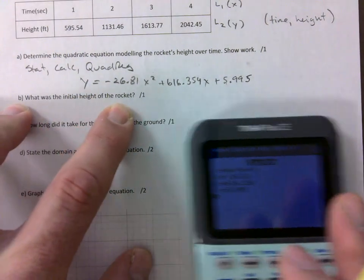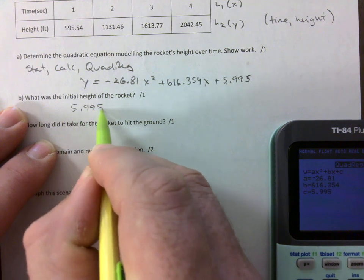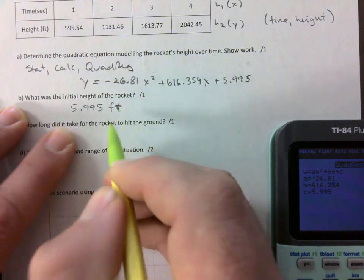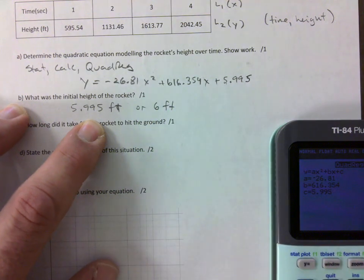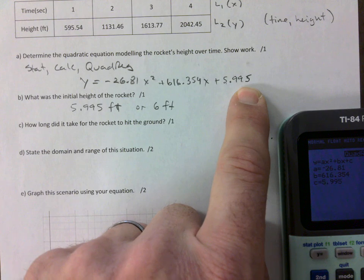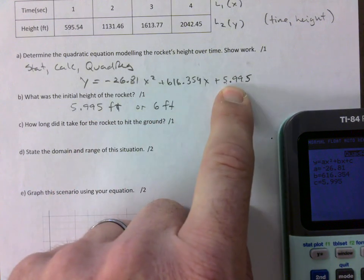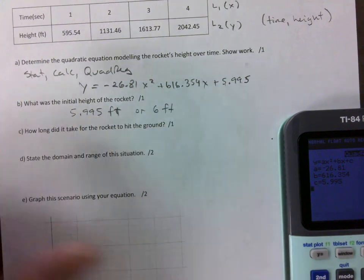So what's the initial height of this rocket? You would say 5.995 feet. That's all you would need to say there. Or 6 feet. It's up to you if you round that to two decimals. And I simply understand this is my Y intercept. That's the initial height at time 0.